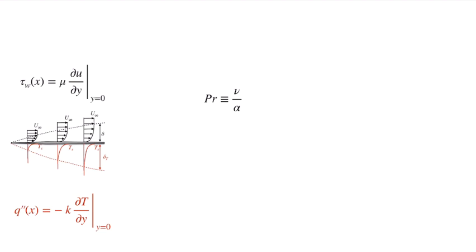So, if we think about the ratio of these two things — one related to the velocity gradient and the process of the momentum boundary layer transitioning from zero to u-infinity, and the other related to the temperature gradient at the wall, which is related to the temperature varying from T-surface out to T-infinity — and we want a non-dimensional number, we can write that the kinematic viscosity divided by the thermal diffusivity, both having units of meter squared per second, will give us a non-dimensional number related to these momentum and thermal boundary layers.